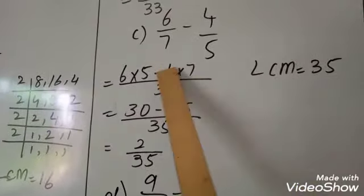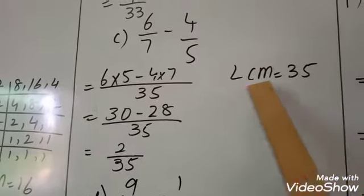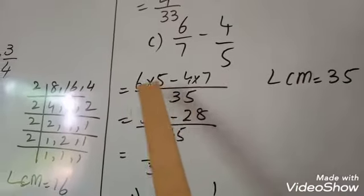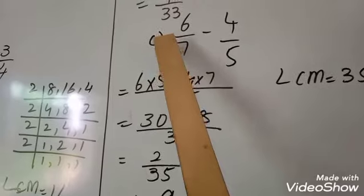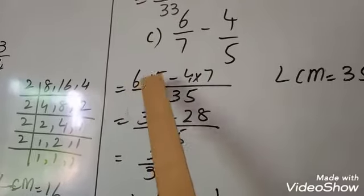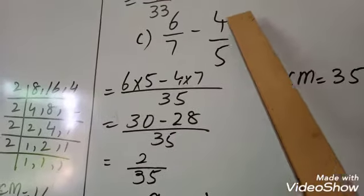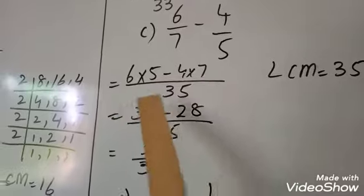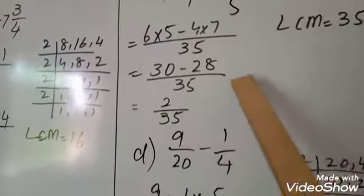C part: these are prime numbers so LCM is 35 — 7 times 5 is 35. Write 35. First value denominator is 7 — 7 times 5 is 35, so multiply 6 by 5. Minus: 5 times 7 is 35, so multiply 4 by 7. 6 times 5 is 30, minus 4 times 7 is 28. 30 minus 28 equals 2/35.